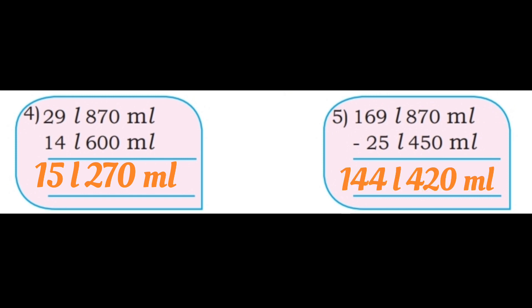Fifth question: 169 liter 270 ml minus 25 liter 450 ml. 7 minus 5 is 2, 8 minus 4 is 4, 9 minus 5 is 4, 6 minus 2 is 4, and 1 remaining. Answer: 144 liter 420 ml.